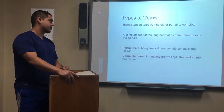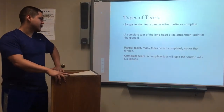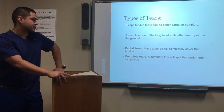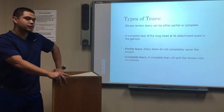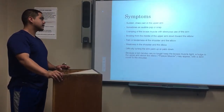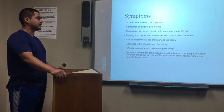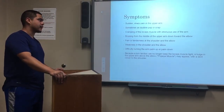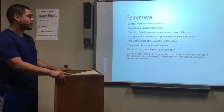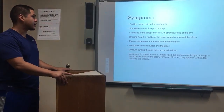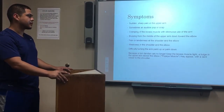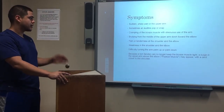There are two types of bicep tendon tears: partial and complete. Bicep tendon tears can be either partial or complete. A complete tear of the long head occurs at its attachment point in the glenoid. Many partial tears do not completely sever the tendon, while a complete tear will split the tendon into two pieces.